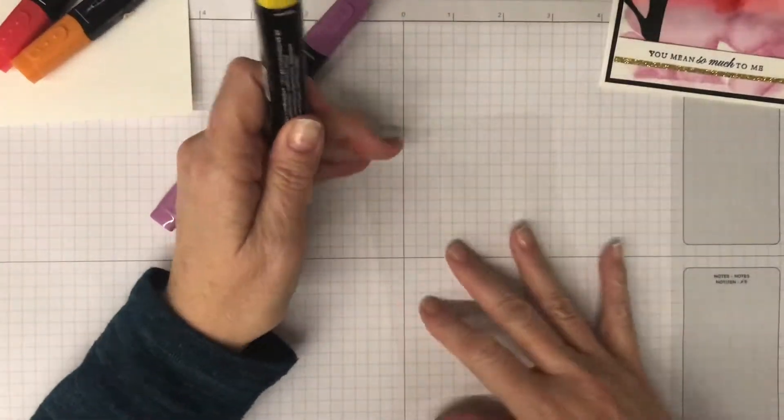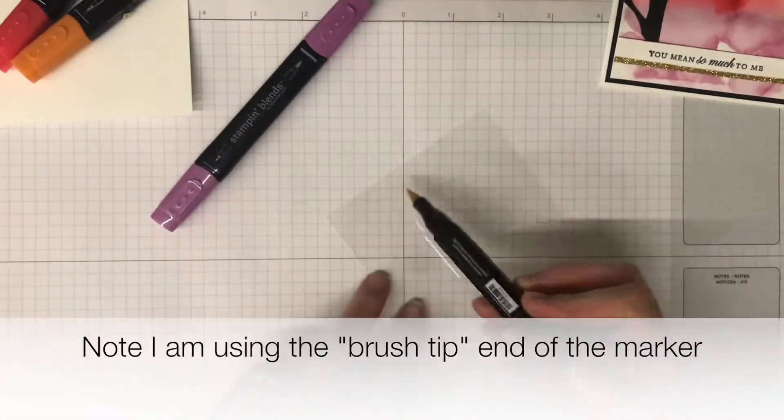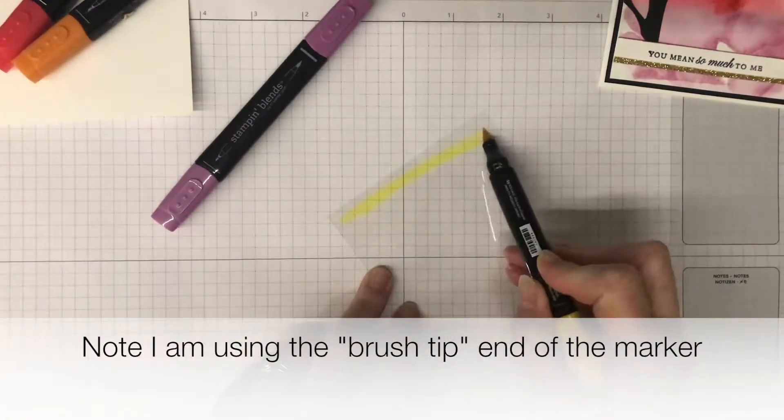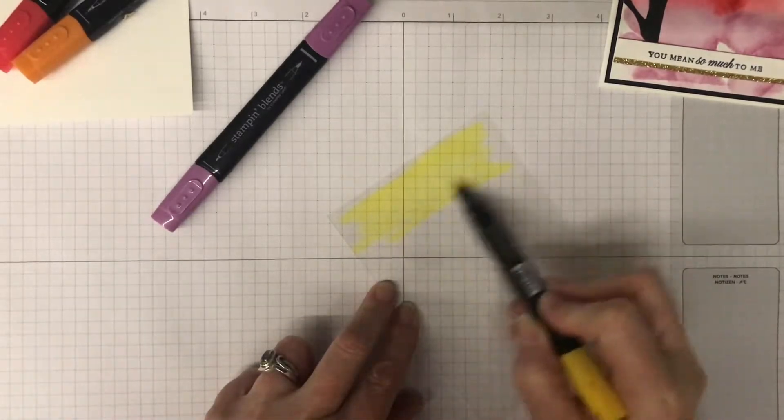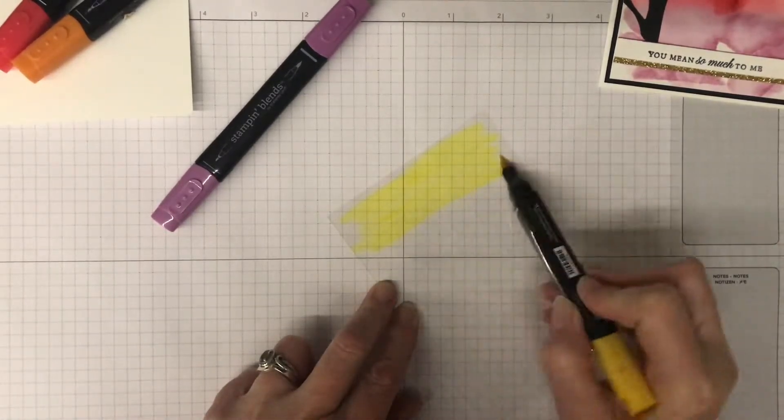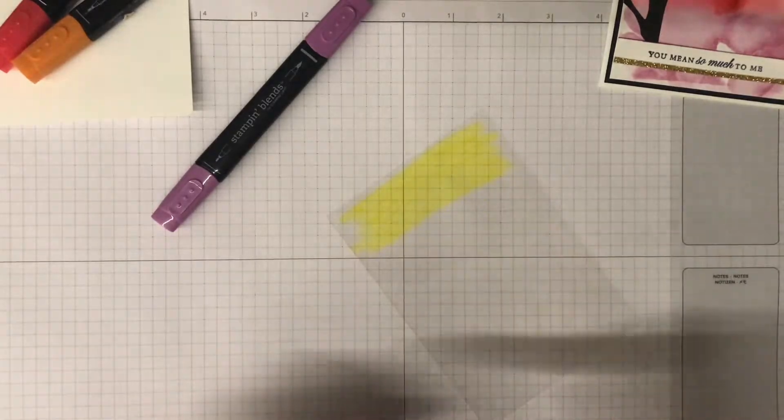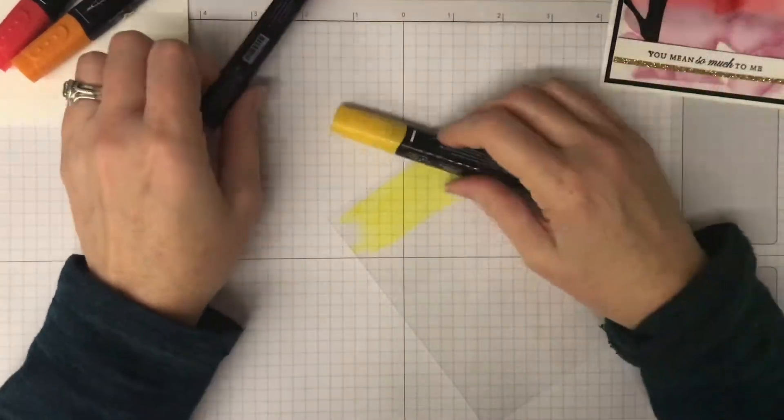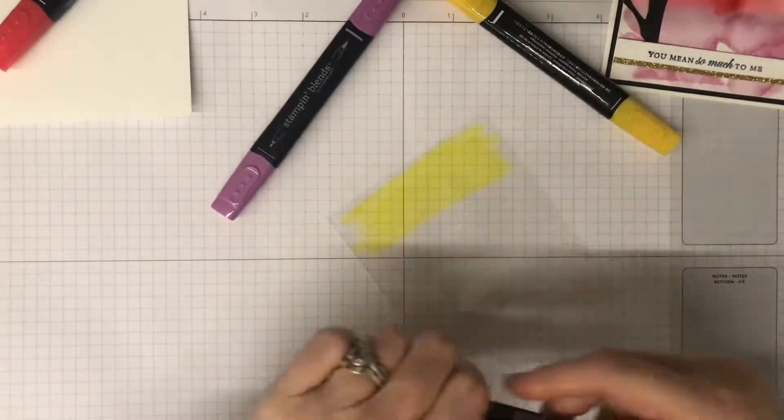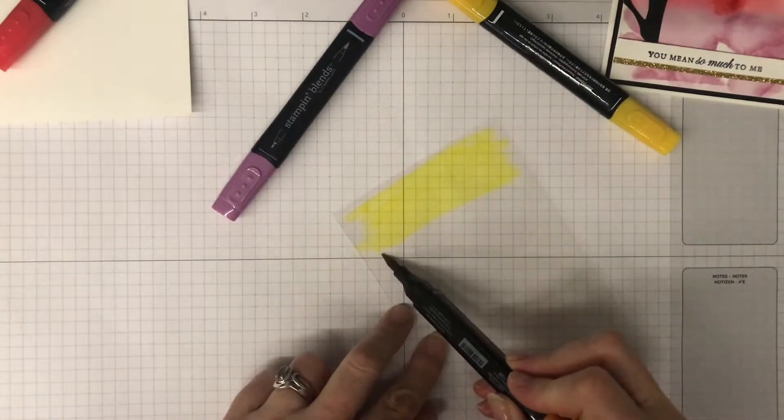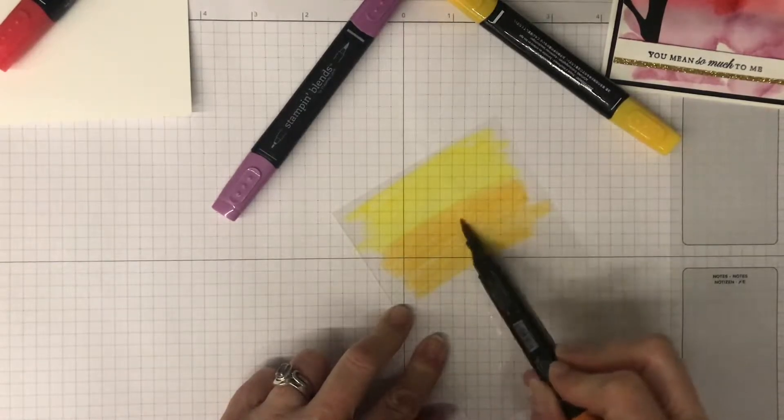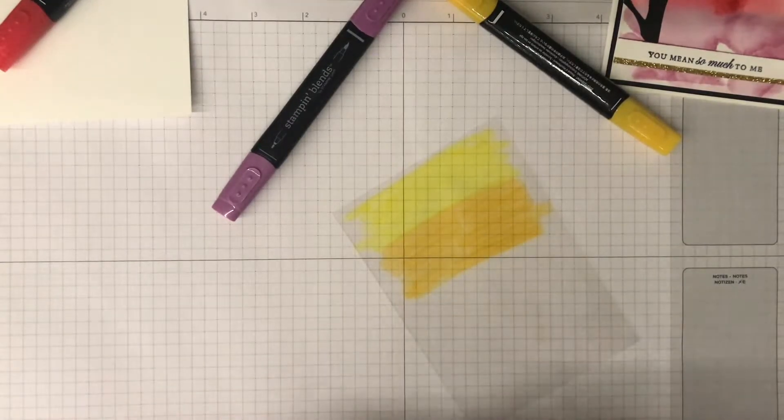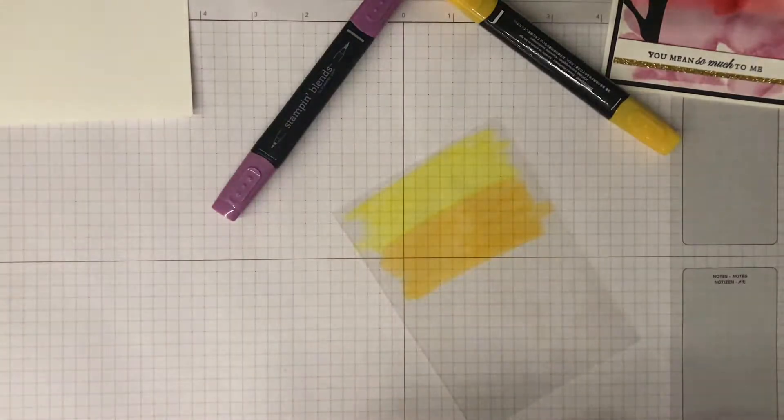Really simple—you're going to start by, I usually start with my lightest color first, and I'm working from the top to the bottom. Sorry about the squeaky noise, that's just part of using these. You're just going to really roughly do an inch or so of scribble, and then I'm going to move down to the next color, which will be the Pumpkin Pie.